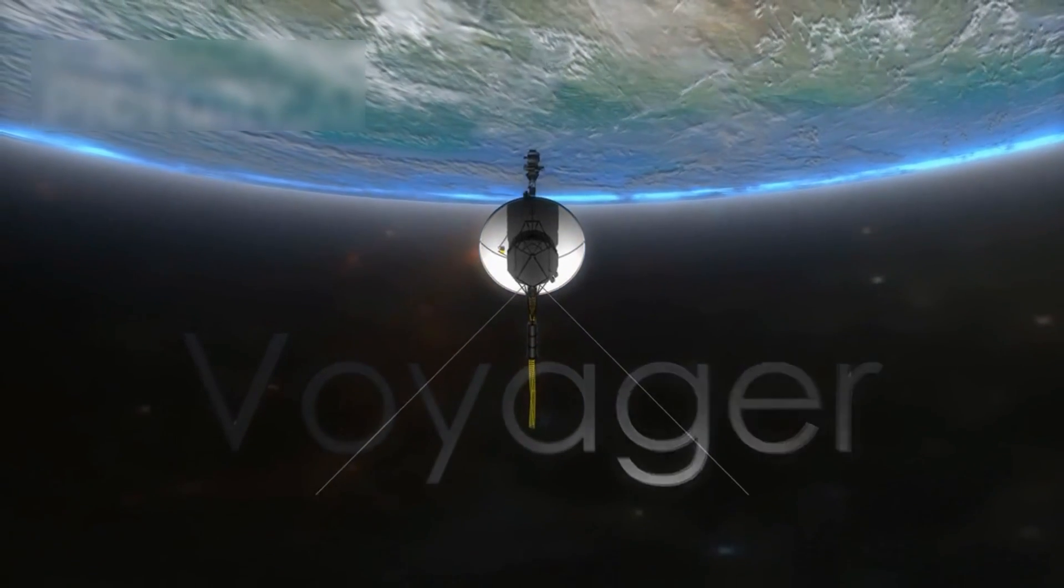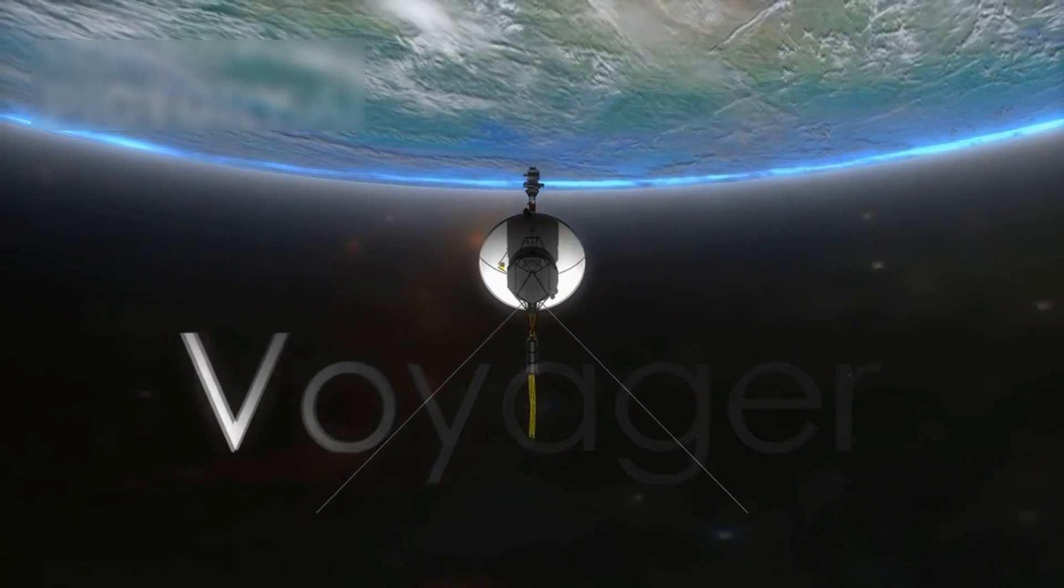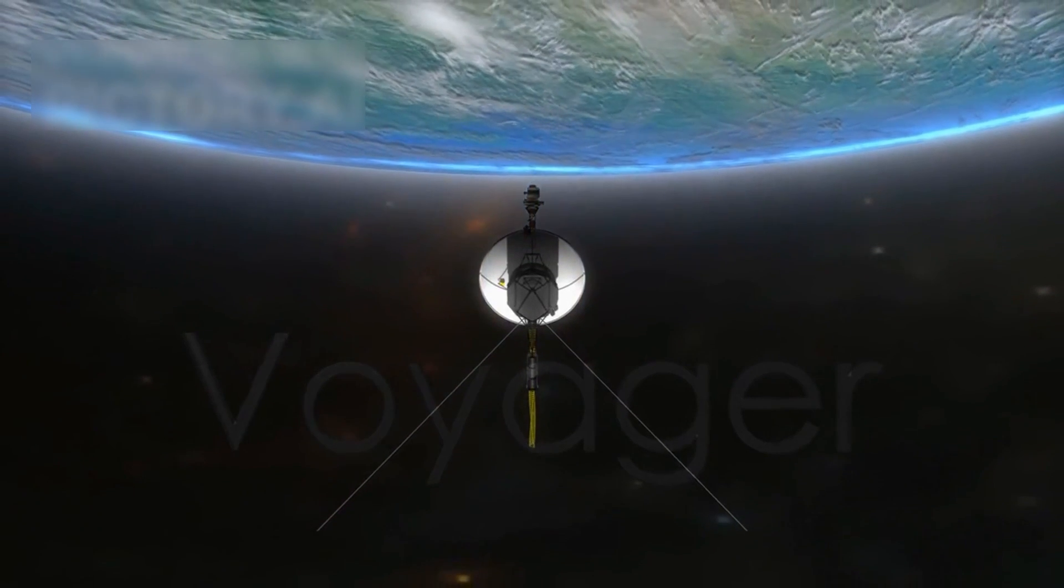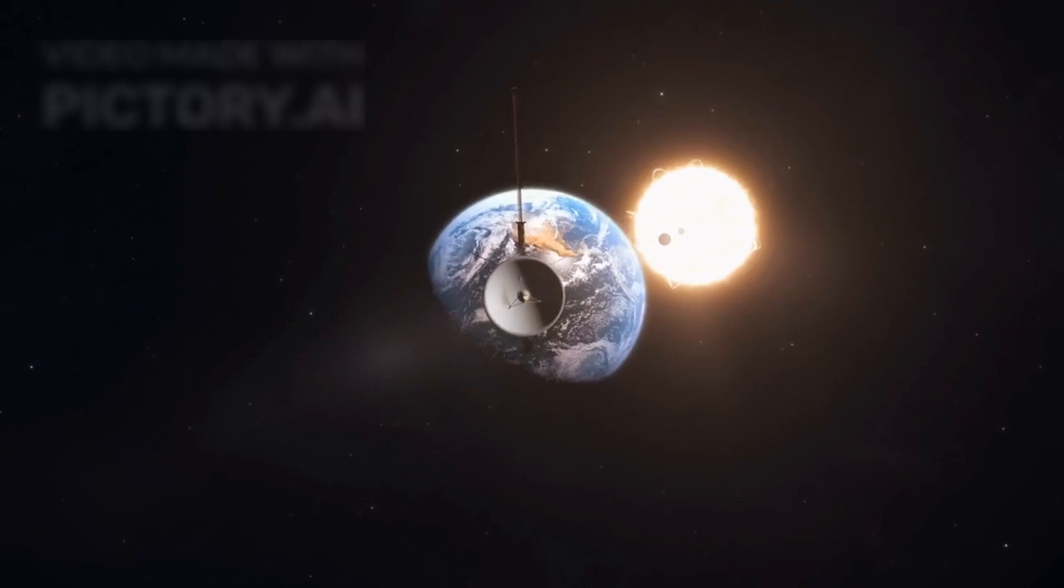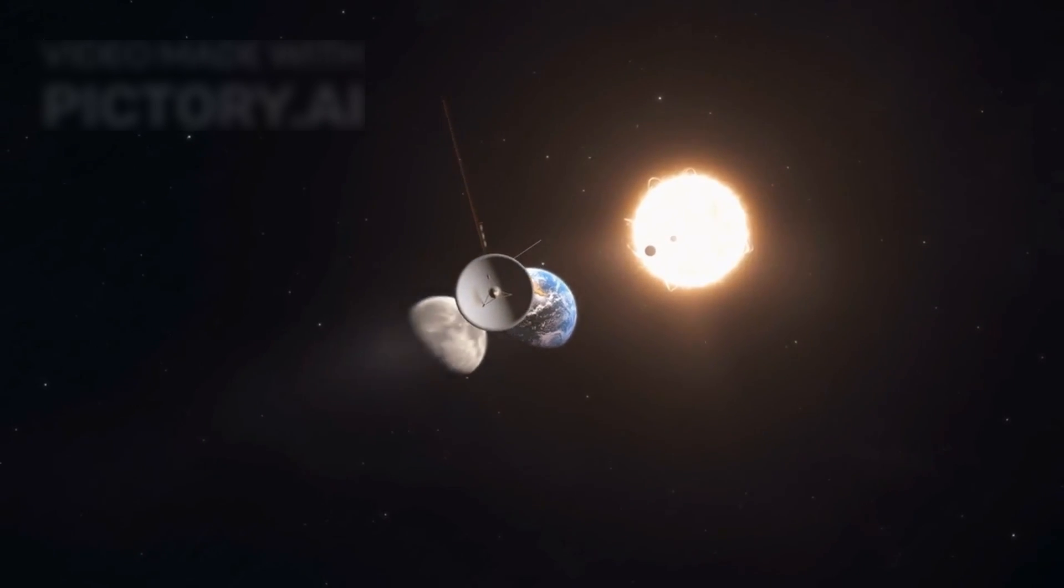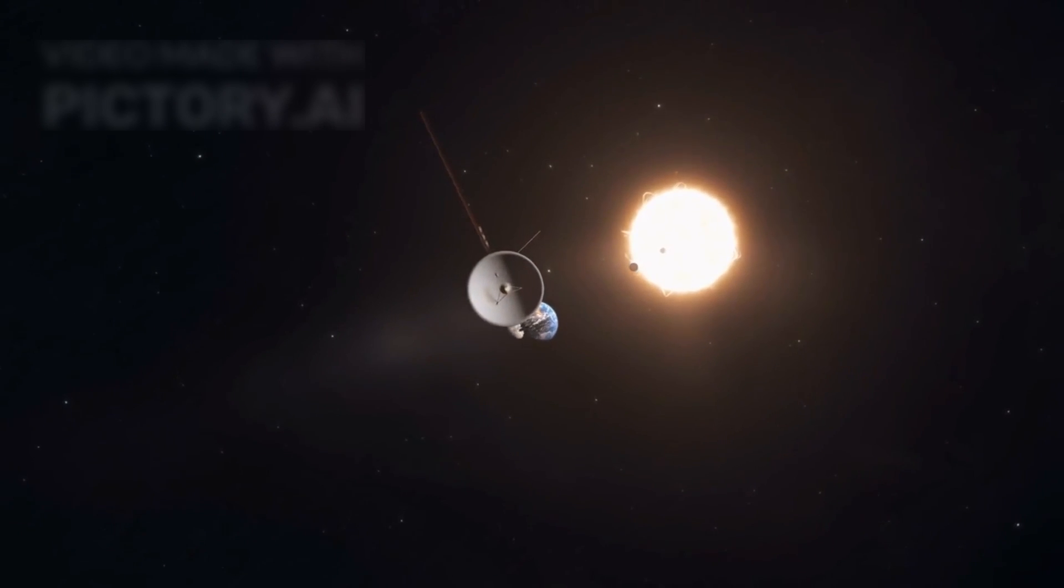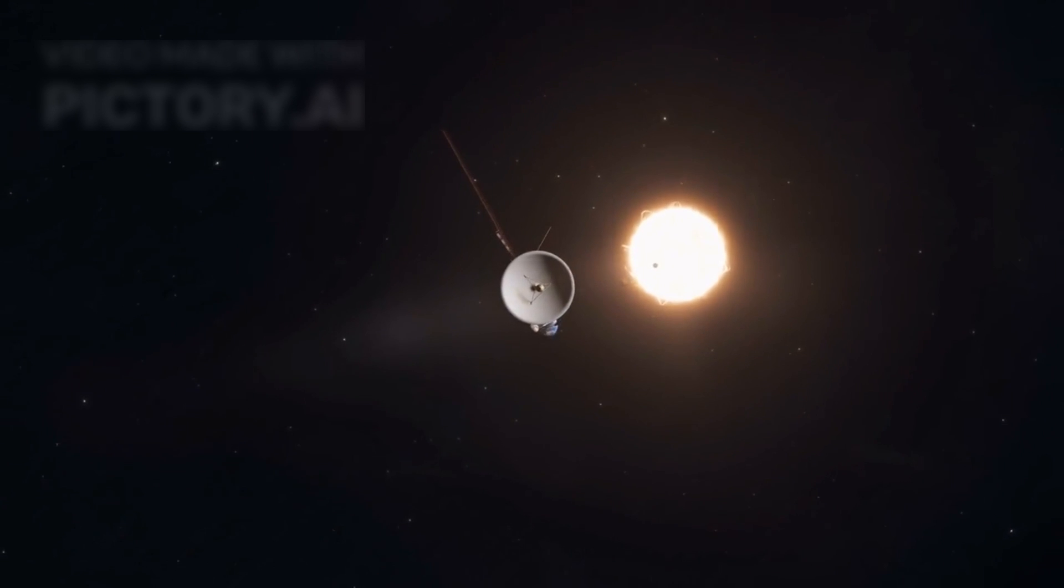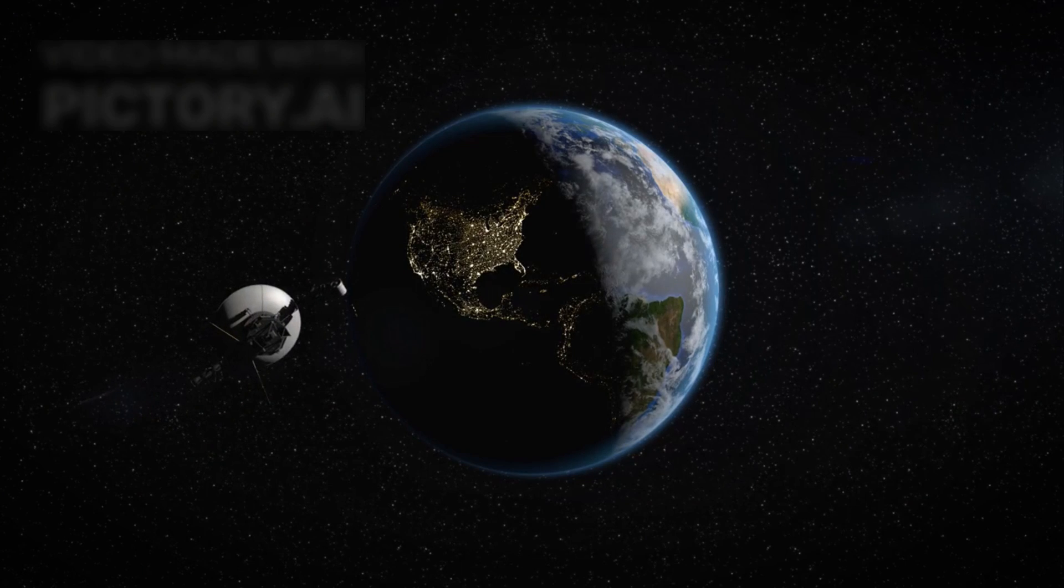Voyager 1's journey has revealed how interstellar winds interact with solar particles, showing a dynamic and shifting boundary at the edge of the solar system. It carries the Golden Record, a time capsule of Earth's sounds, languages, and music intended for potential extraterrestrial encounters.